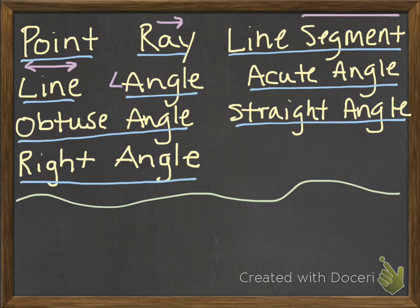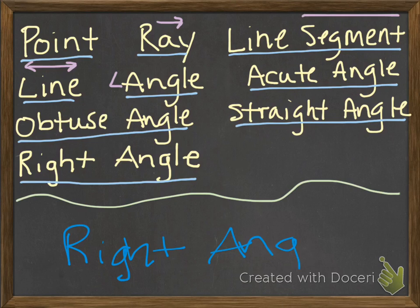How about an angle that forms a square corner, or exactly 90 degrees? If you were thinking right angle, you are correct — exactly 90 degrees, has that little square corner in there.